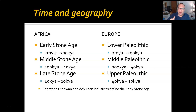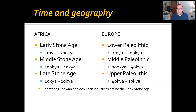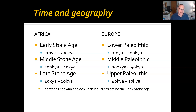Strata are laid down horizontally with the older ones at the bottom and the newer ones at the top. So with that in mind, in Africa we talk about an early stone age, a middle stone age, and a late stone age. Whereas in Europe we talk about the lower Paleolithic, the middle Paleolithic, and the upper Paleolithic. Lower and early match up because early is the oldest and lower is the oldest. Middle and middle are the same, and late and upper are the same — late is the newest and upper is the newest.